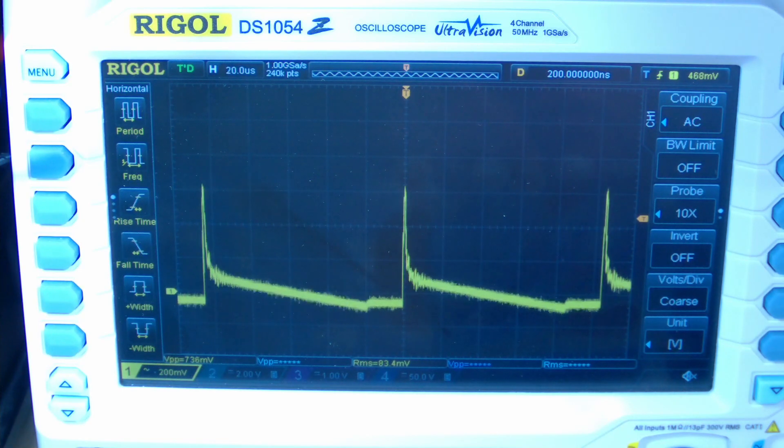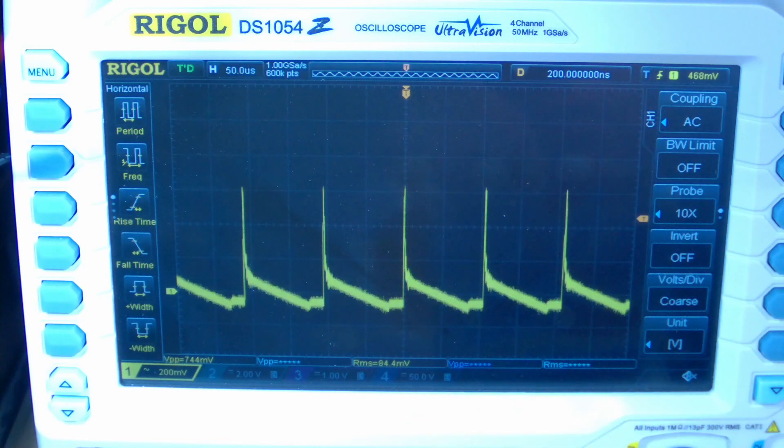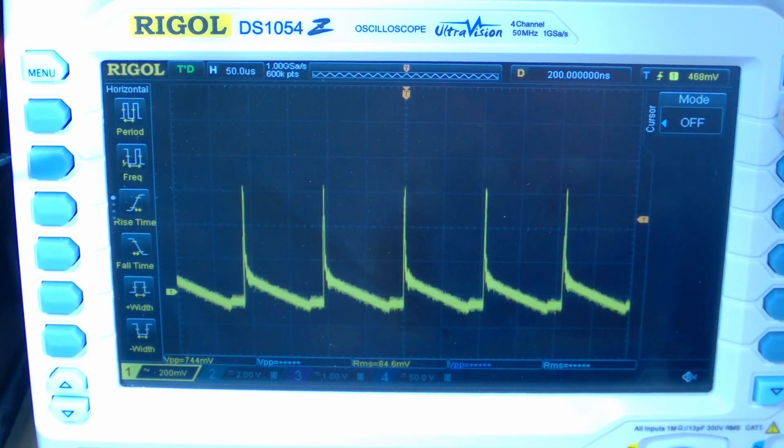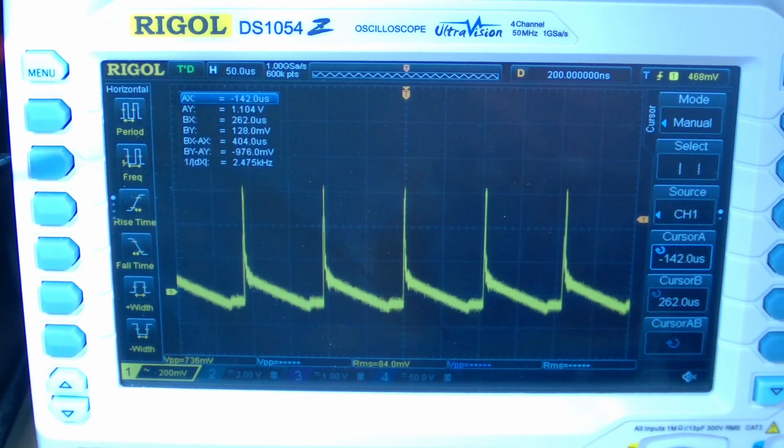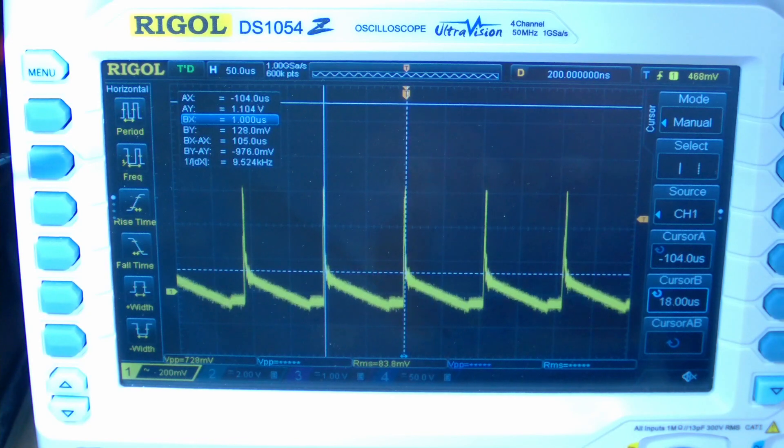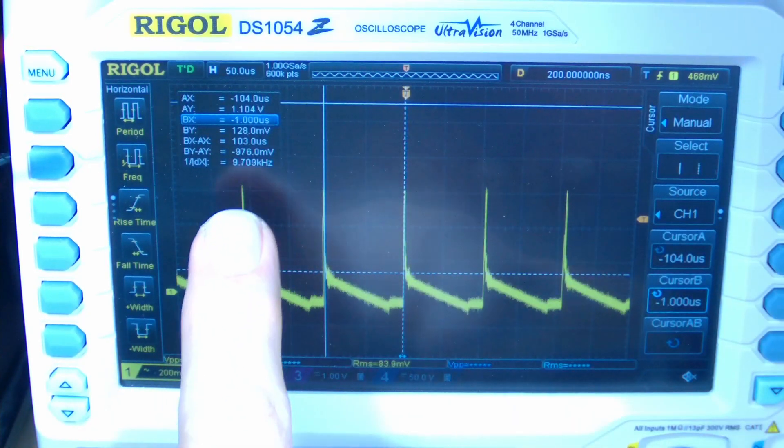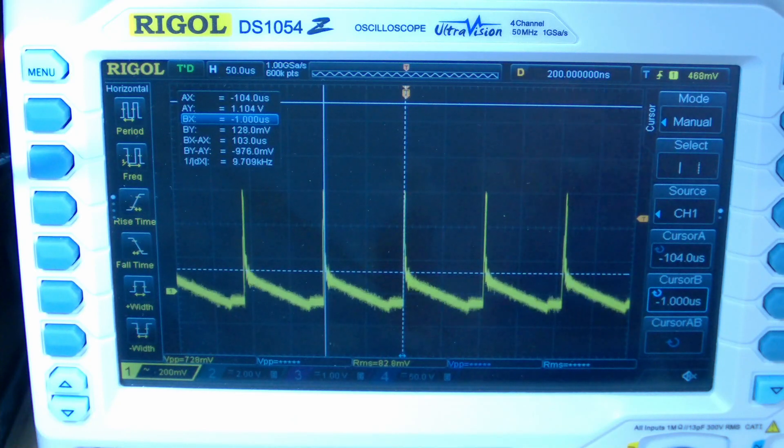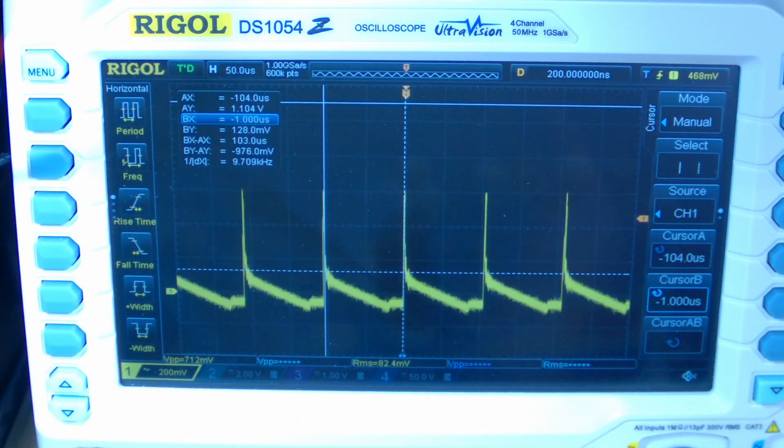So let's go in here and measure what the frequency is here. So we'll turn these cursors on, and let this down on manual, and put that cursor right there. This other cursor over here. Peak to peak is 9.7 kilohertz. So that's not too good. We're right in the middle of the audio band, and can't really change that.